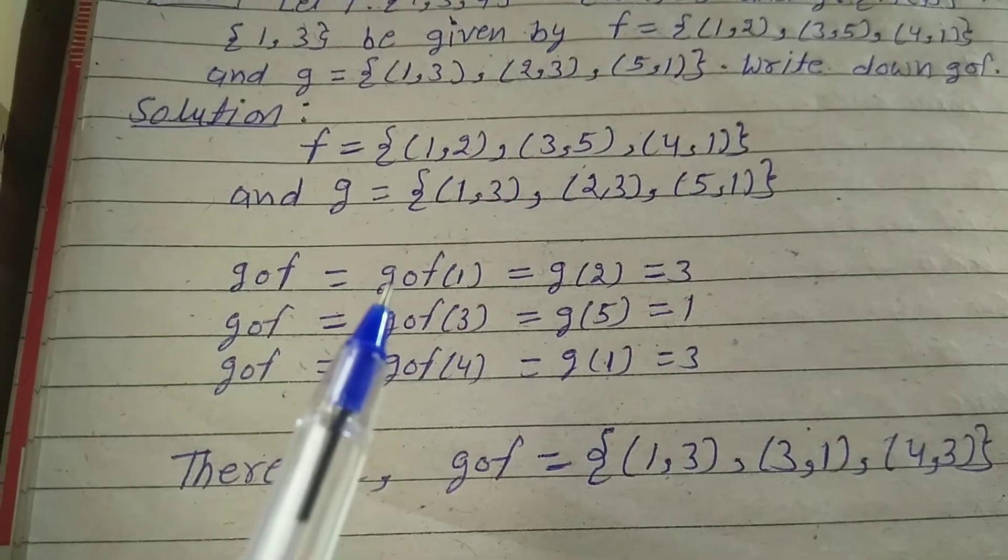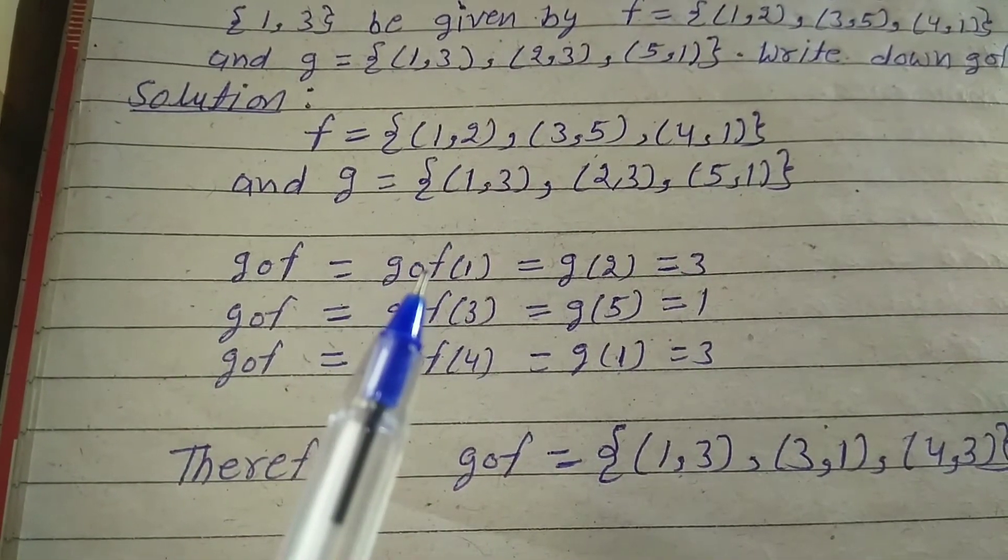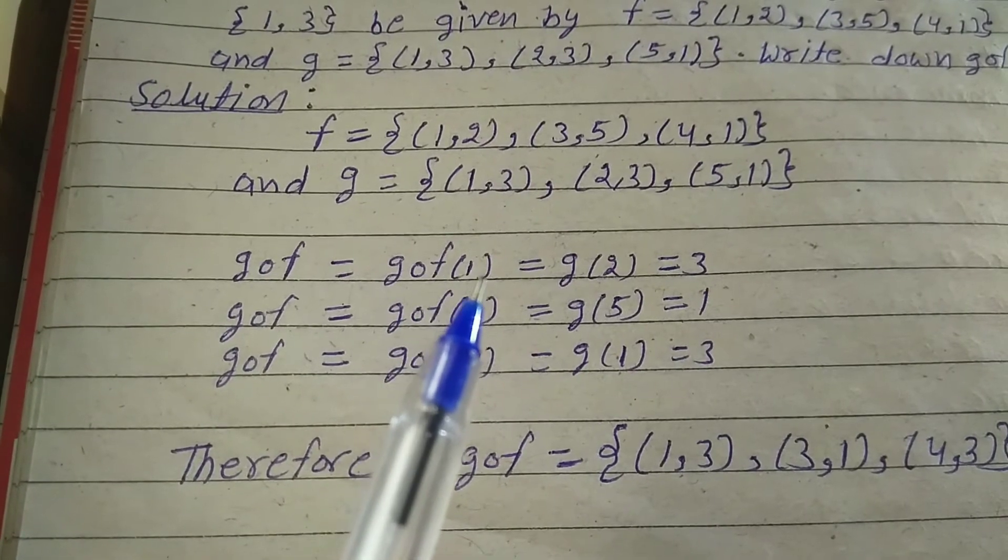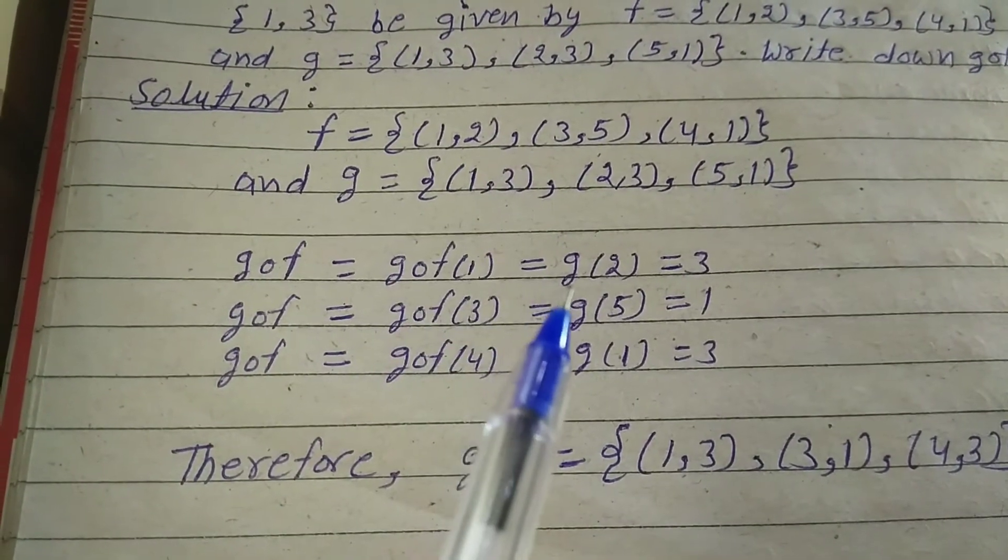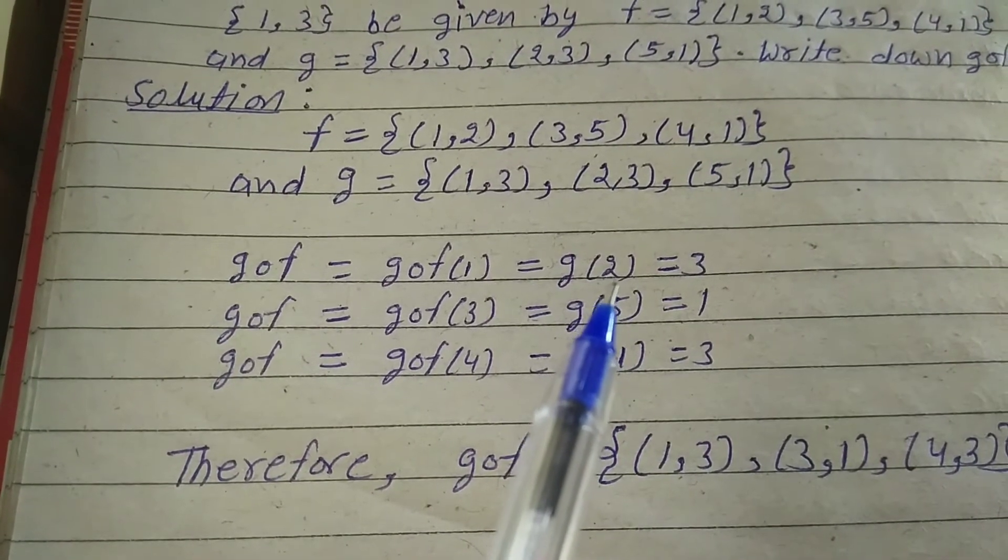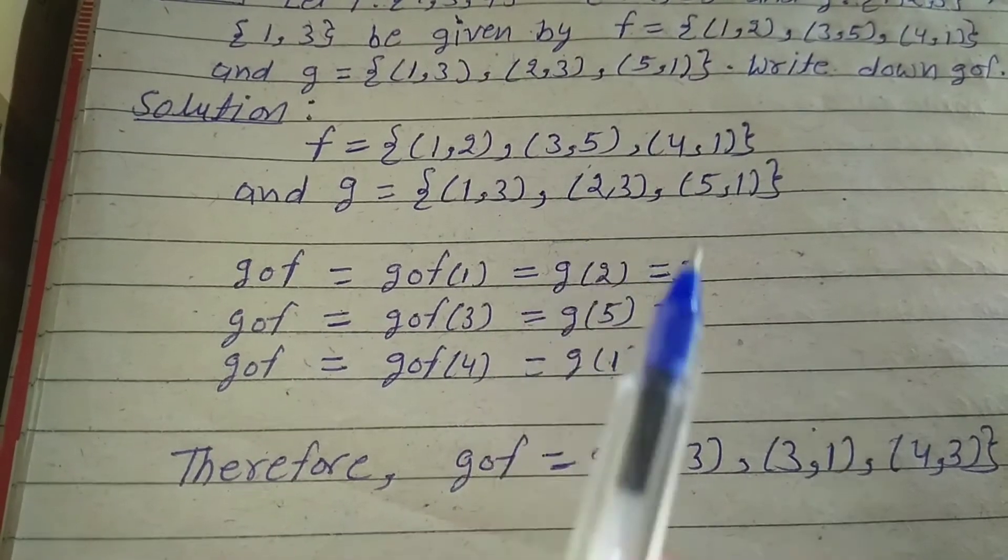GoF: First take F value is 1, so GoF(1) - F of 1 value is 2, so G(2), and G(2) value is 3, so equals 3.